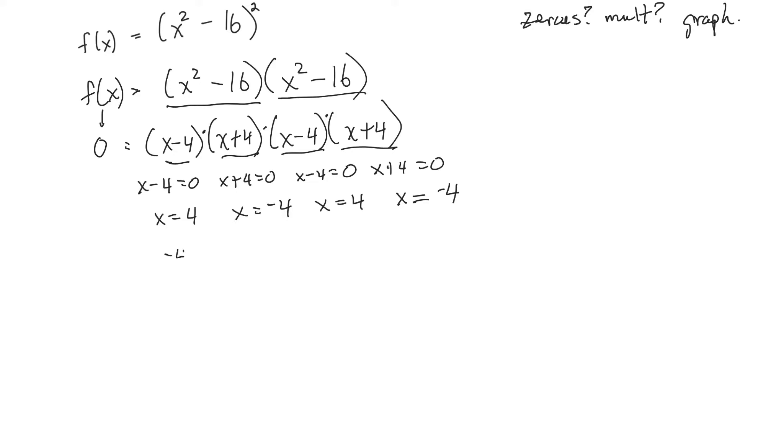So my zeros are, if I put them in order, minus 4, minus 4, 4, and 4. So my zeros are negative 4 with a multiplicity of 2, and positive 4 with a multiplicity of 2.